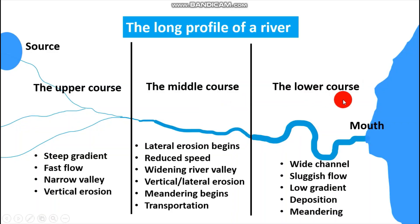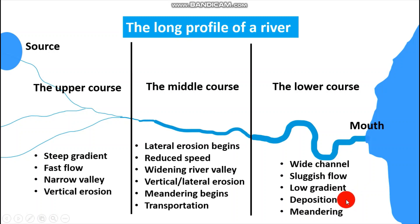Then we have the lower course of the river, which is the old stage. Here we have a wide channel — you can see the channel is wide. The river is flowing very sluggishly, very slowly. The gradient is reduced, and this is the stage where deposition takes place and formation of meanders. This stage is dominated by features resulting from deposition: the formation of the floodplain and its associated features, development of natural levees, raised riverbeds, formation of oxbow lakes, development of river braids, and any other feature associated with deposition, including the delta which develops at the mouth of the river.